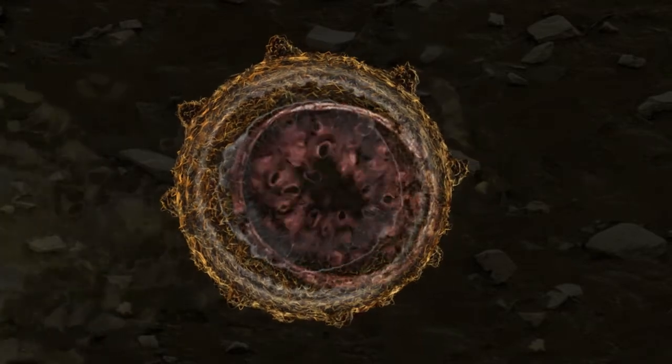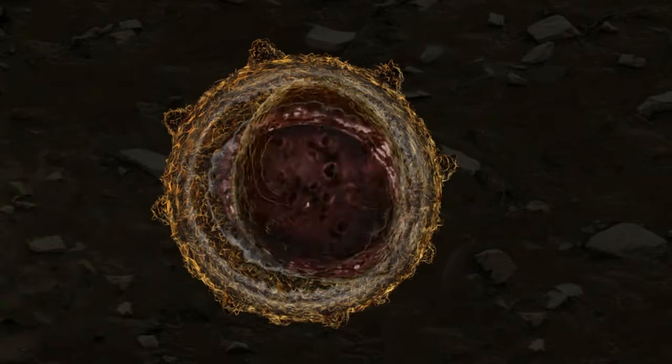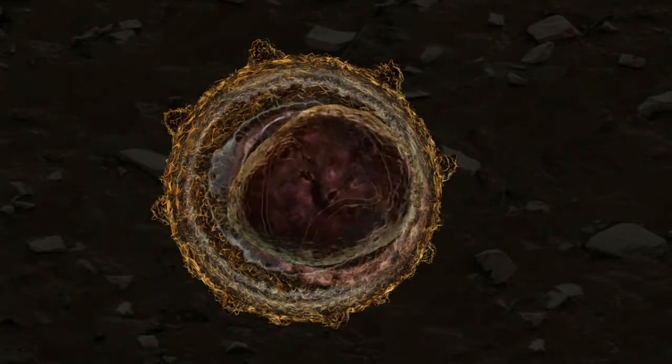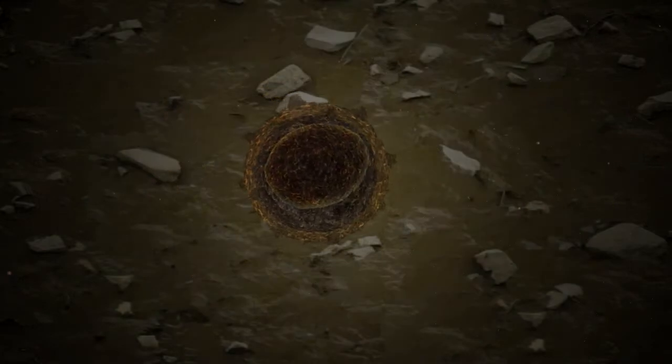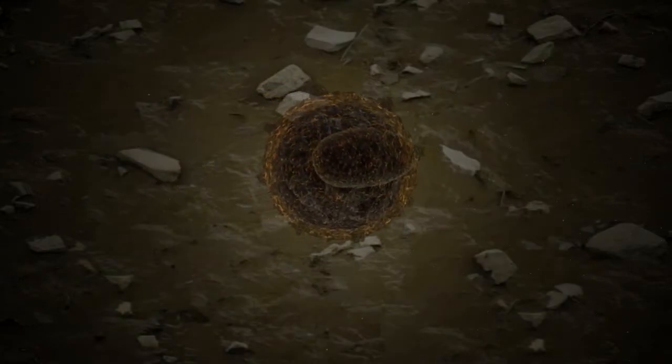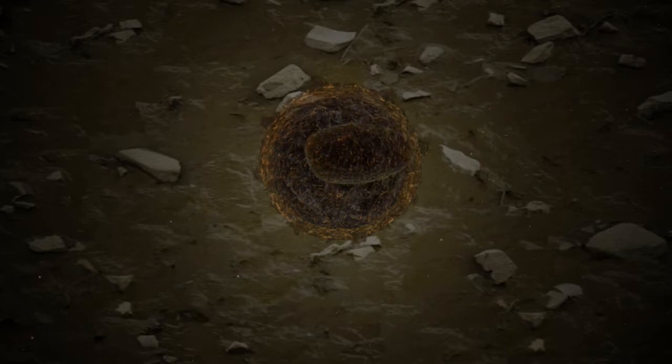The resting spore undergoes cell division and changes from a hardened survival structure into a fragile, short-lived zoospore, which has two hair-like flagella that it uses to swim towards a root hair.